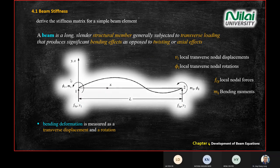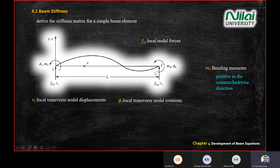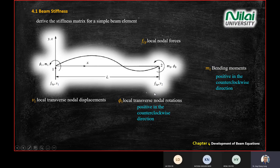To recap the sign conventions: bending moment is positive when anticlockwise. We always assume anticlockwise first; if the calculation gives a negative result, it means the direction is the other way. For rotation, the same applies — anticlockwise is positive. For force and displacement, we follow the positive y-axis direction.